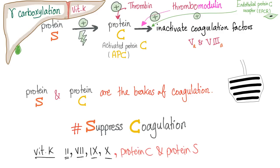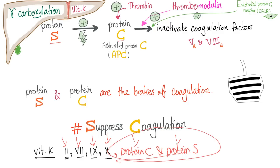Protein C and protein S are vitamin K-dependent factors produced by the liver through a process called gamma carboxylation. What's the name of the enzyme involved in gamma carboxylation? Let me know in the comments. Thrombin activates protein C, and to activate protein C you need protein S, thrombin, thrombomodulin, and the endothelial protein C receptor (EPCR). The result is activated protein C, or APC — which inactivates coagulation factors 5 and 8.